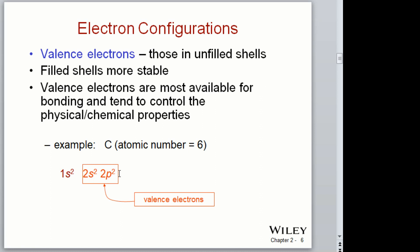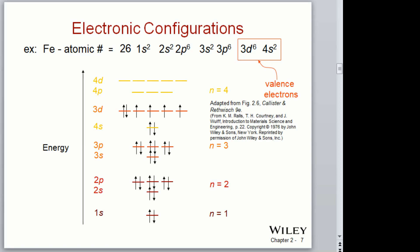With four electrons but only two of them unpaired, it looks like carbon only has two sites for bonding. We're going to find out later that's not true — carbon actually has four available bonding sites — and we'll come back to that when we talk about sp hybrid bonds later.